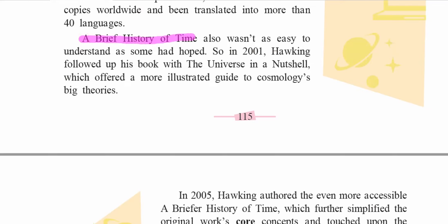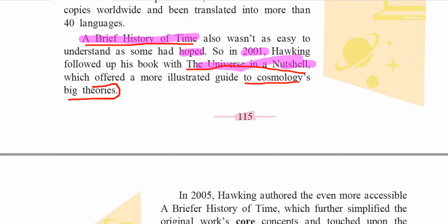A Brief History of Time was not as easy to understand as some had hoped. So in 2001, Hawking followed it with The Universe in a Nutshell, which offered a more illustrated guide to cosmologies of big theories. This was the second major book, published in 2001, which elucidated cosmological theories.